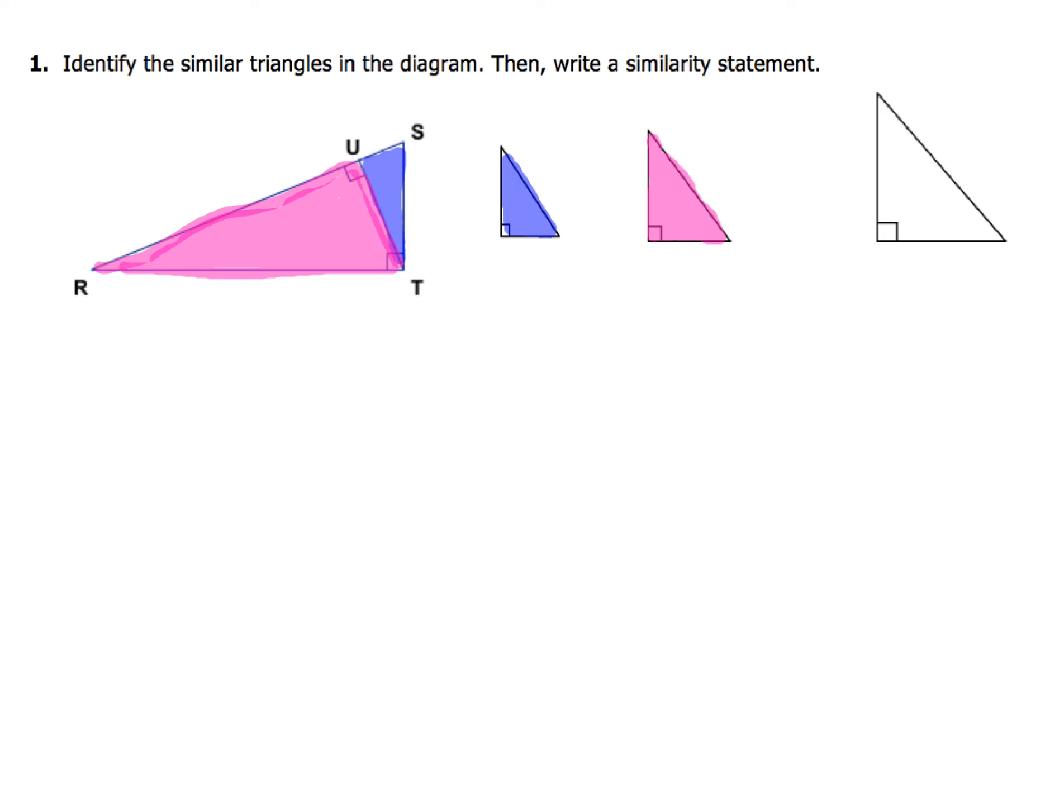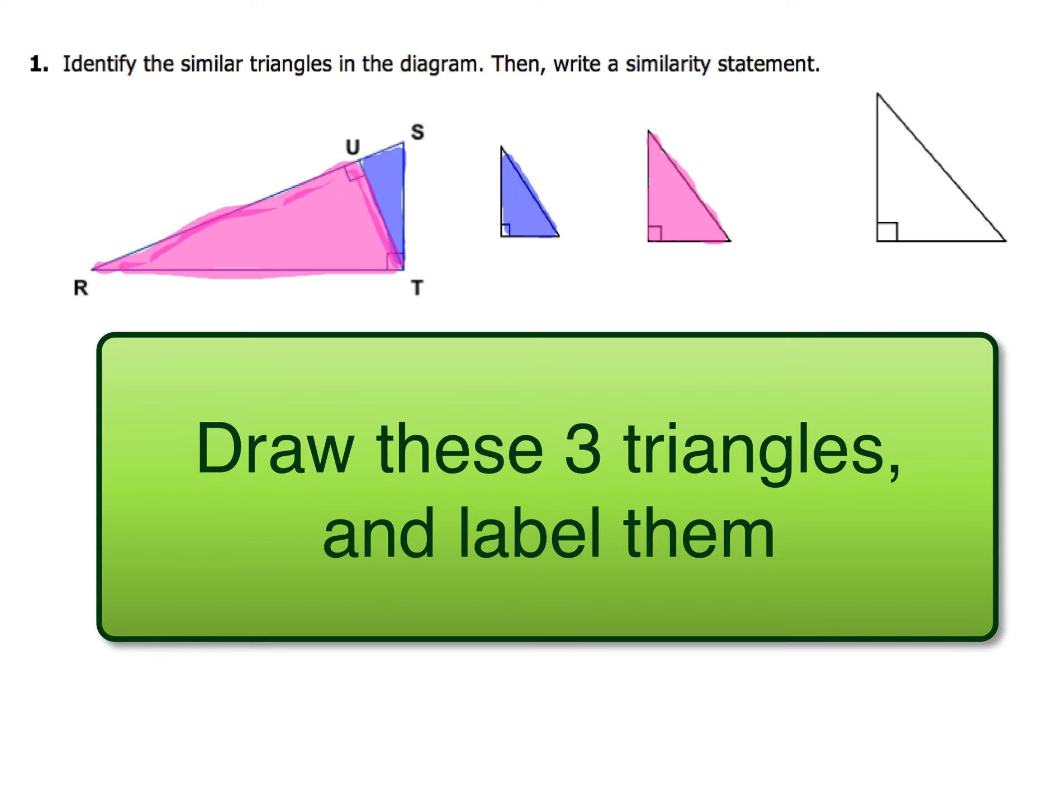So here we go again with example number one. What I want you to do first is go ahead and draw those three triangles, color code them if you need to, whatever you need to do, and I want you to identify each one of the sides going around the whole thing.